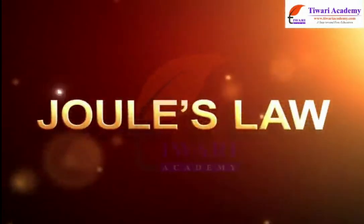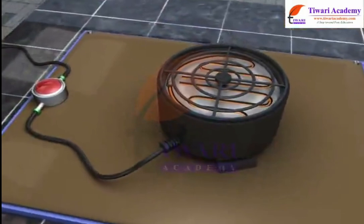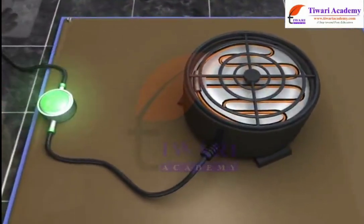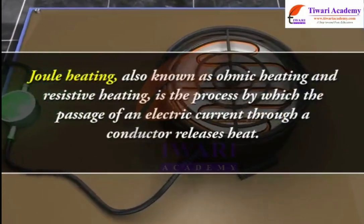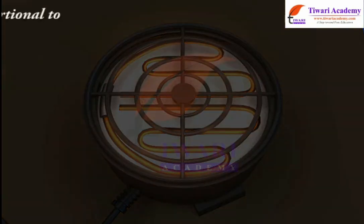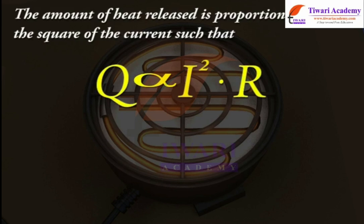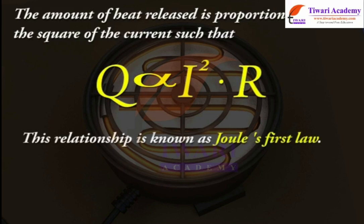Joule's Law. We all know that heat is generated whenever current passes through a conductor. Joule heating, also known as ohmic heating and resistive heating, is the process by which the passage of an electric current through a conductor releases heat. The amount of heat released is proportional to the square of the current, such that Q is directly proportional to I² × R. This relationship is known as Joule's first law.